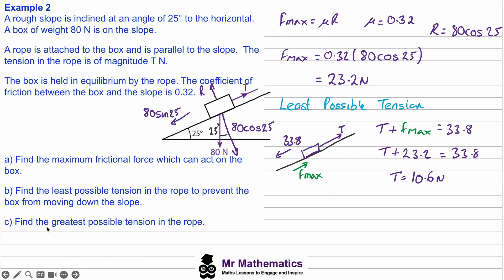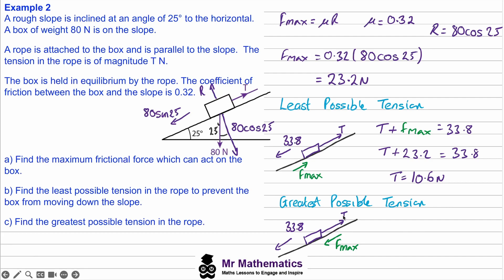For part c, find the greatest possible tension in the rope. If we pull the rope so the box is on the verge of moving up the slope, friction now acts down the slope against the motion. Tension must balance both the friction and the downward weight component. Since the box is in equilibrium, tension equals 33.8 plus 23.2, giving a maximum tension of 57 newtons.